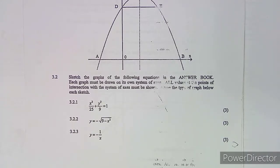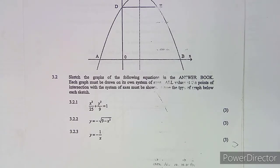We are given to sketch the graphs of the following equations in the answer book. Each graph must be drawn on each system of axes, all values of the points of intersection with the axes must be shown, and you must name the type of graph below each sketch.